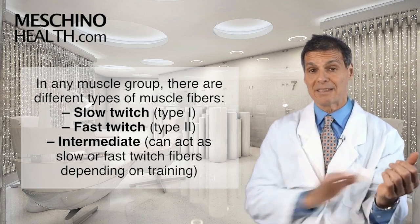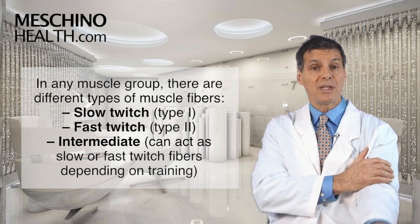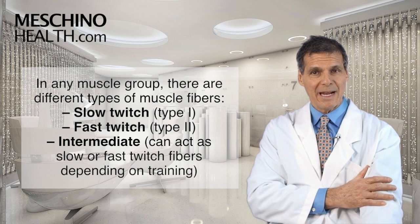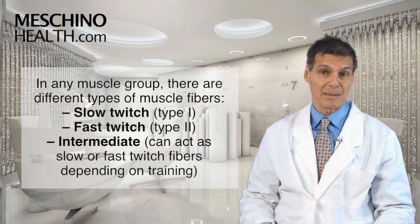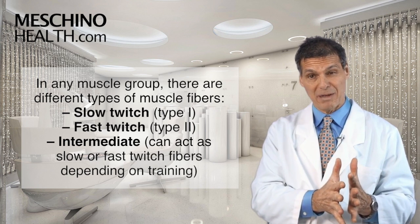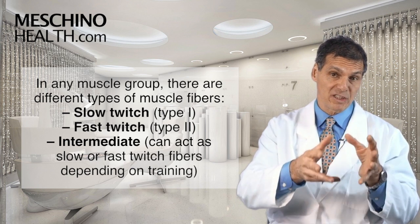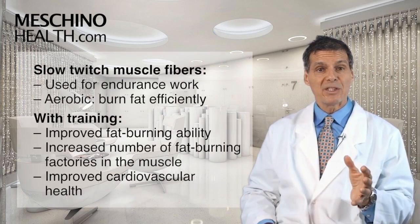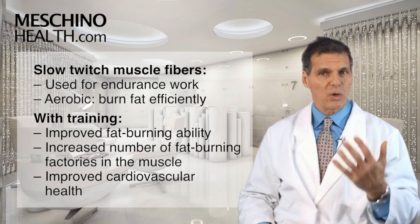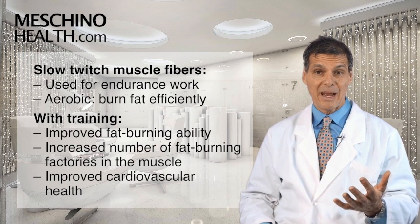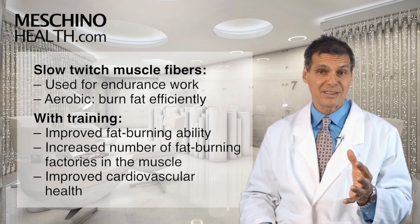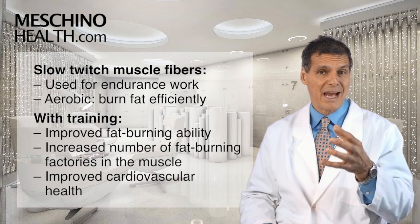In any muscle — let's say your bicep muscle as an example — there are two types of muscle fibers. There's your slow twitch muscle fibers, known as the type 1 fiber, and then there's the fast twitch muscle fiber, known as the type 2 fiber. There's also an intermediate fiber, and the way you train the muscle will decide how that fiber is going to behave. But for now, let's talk about slow twitch and fast twitch fibers. Slow twitch muscle fibers do more endurance work. They're more aerobic in nature — they like to burn fat. When you train them, it improves your ability to burn fat, increasing the number of fat-burning factories inside the muscle, so you become a better fat-burning machine.